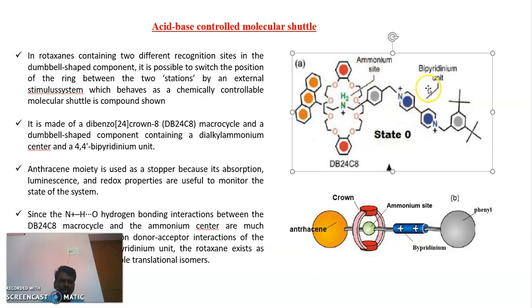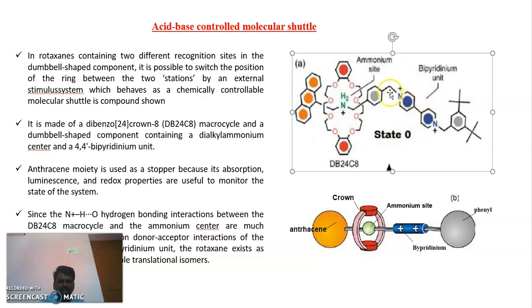But when this bipyridinium has partial charge involved — partially involved in the delocalization reactions — somewhat it is having less attraction towards this oxygen. So this is the normal chemical structure and chemical properties.